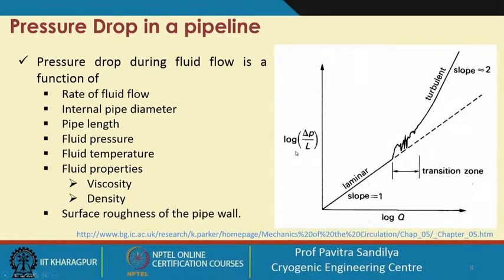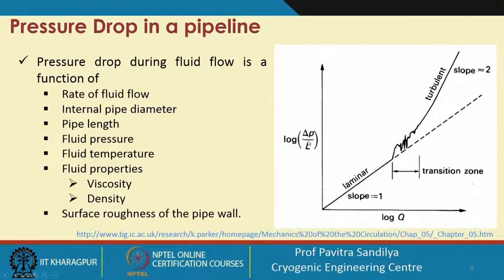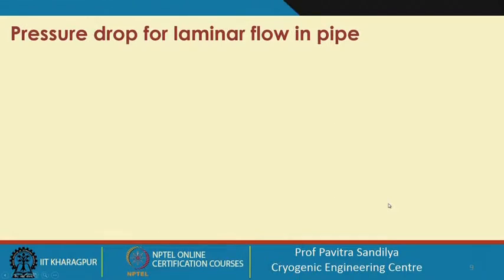In this figure, we have shown the pressure drop per unit length as a function of flow rate. At lower flow rate we have laminar flow, in between we have some transition zone, and ultimately it goes to turbulent flow. The slope of the line changes from 1 to 2, plotted on a log-log scale — log of ΔP/L (pressure difference per unit length, i.e., the pressure gradient) versus log of flow velocity.